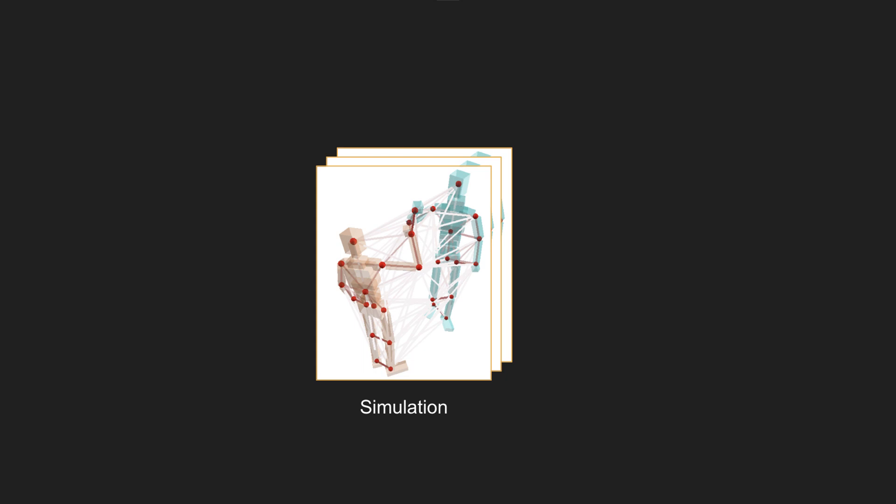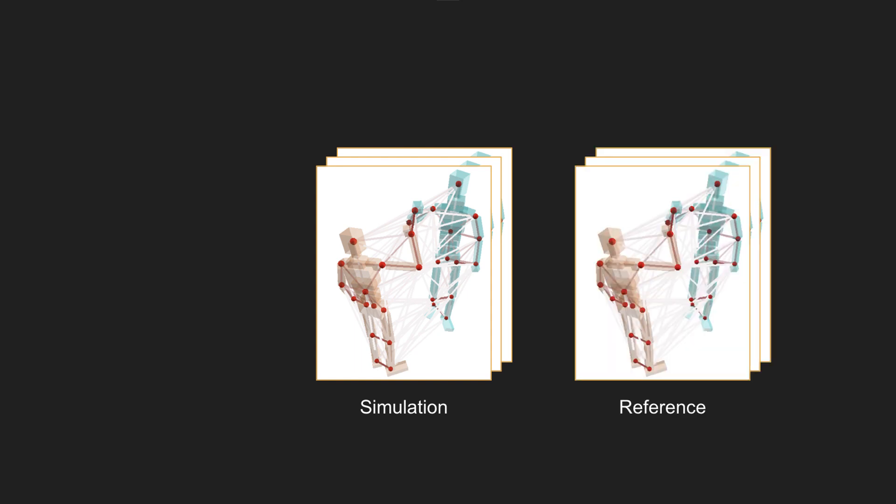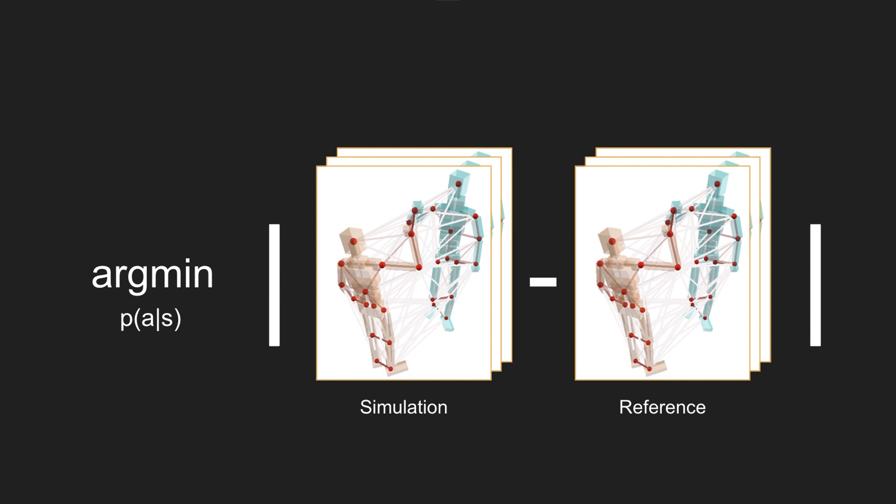To preserve the motion quality of the character and the spatial relationship during the interaction, we utilize an interaction graph structure that captures the relative spatial relationship of different body parts at each frame. We design a novel reward function that measures the similarity between the interaction graph in the simulation and the one in the reference at every frame. We apply an adaptive weighting function to the edges in the graph to emphasize the importance of closely interacting edges.